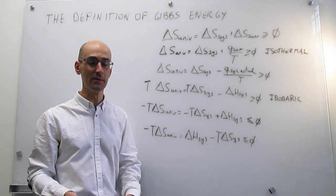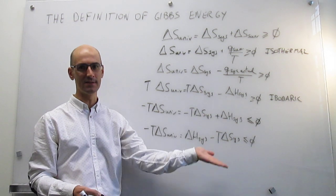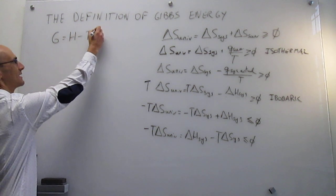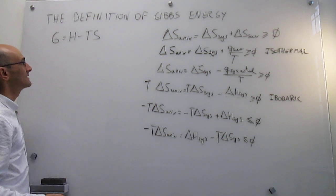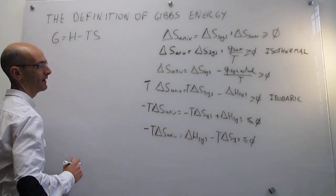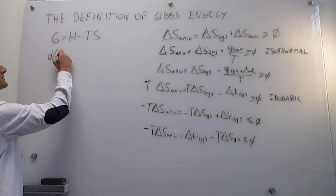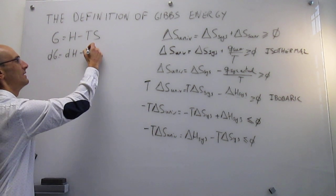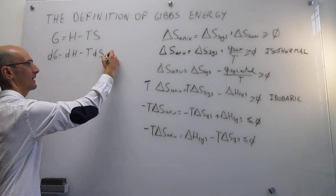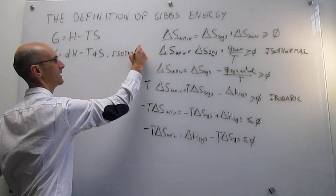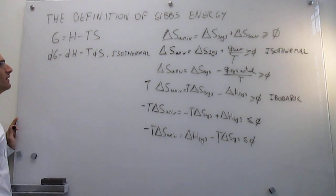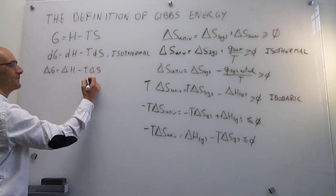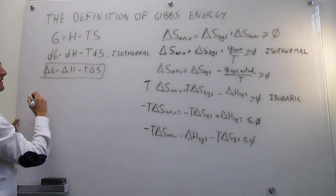Now we introduce the Gibbs energy and how it relates to this discussion of the second law. The Gibbs energy is defined as G equals H minus TS. Taking first derivatives under constant temperature — isothermal — the differential of G is dH minus T dS. Integrating, since T is constant, gives delta G equals delta H minus T delta S. This is exactly the same expression we derived from the second law.